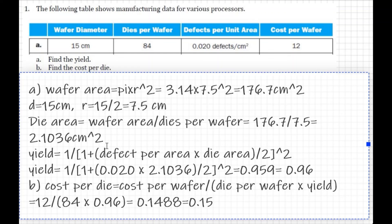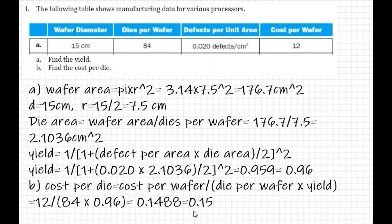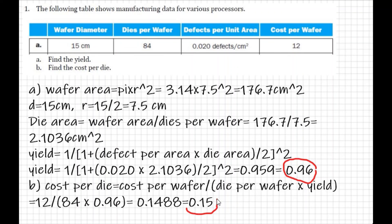So the cost per die is approximately 0.1515. To summarize: yield = 0.96 and cost per die = 0.16.